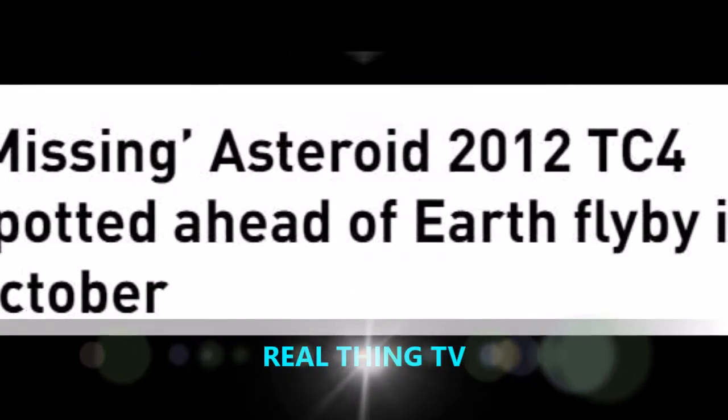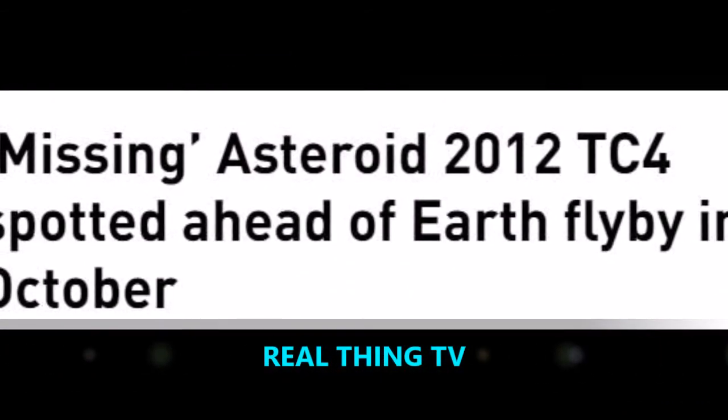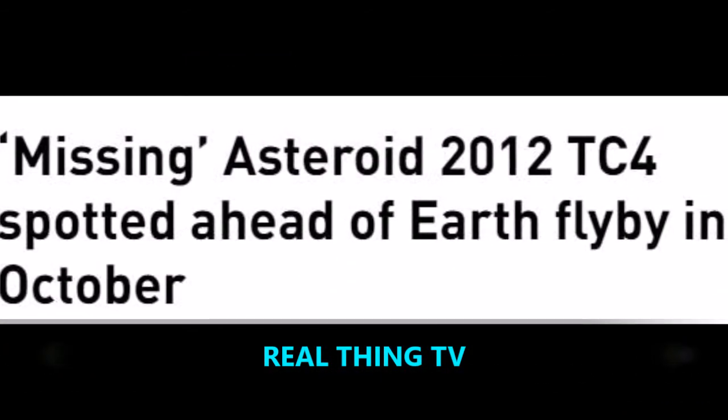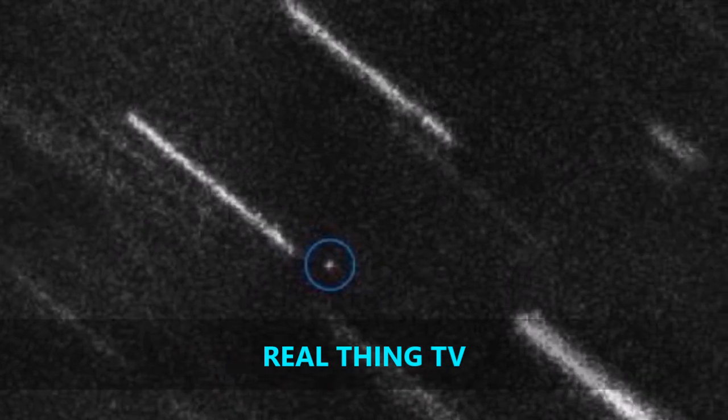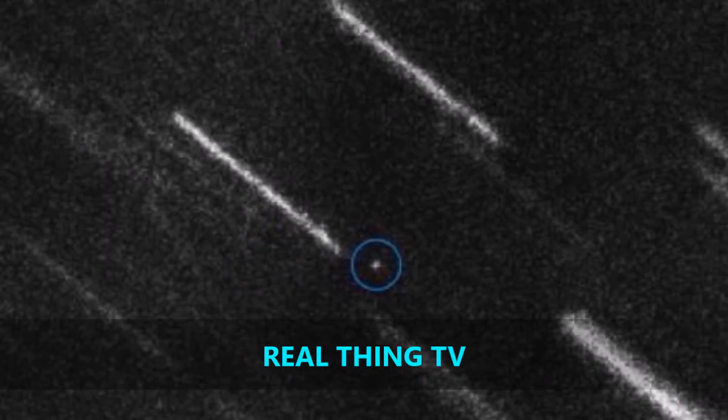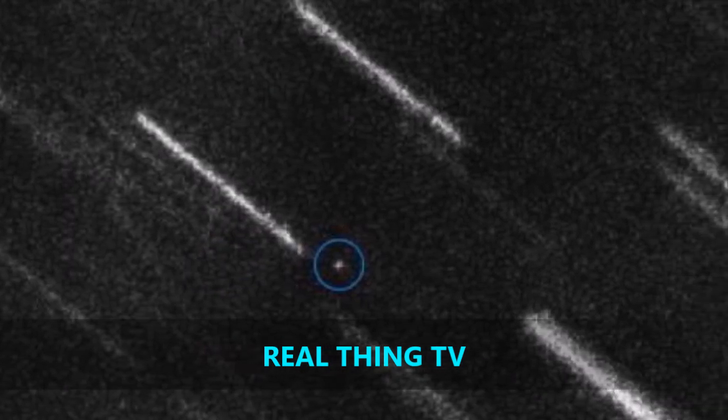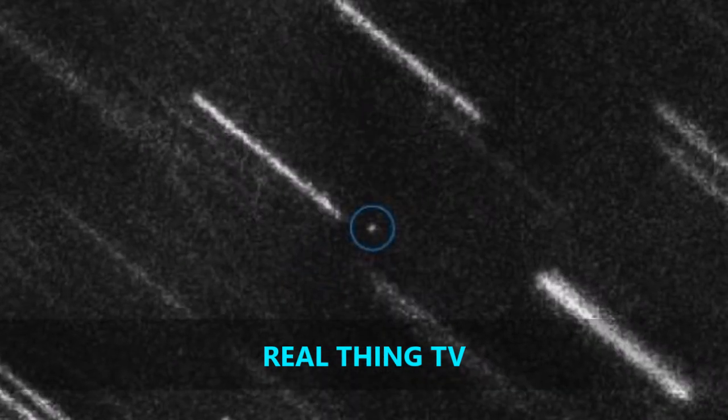Missing Asteroid 2012 TC4 spotted ahead of Earth flyby in October. An asteroid set to whiz past Earth in October will miss our planet by 44,000 km, according to new observations which spotted the wandering space rock for the first time in five years.